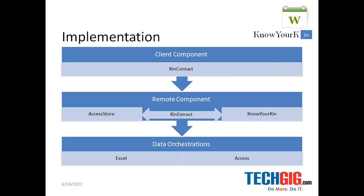This is the implementation basically. You have the client component where you have a contact as a client component — it contacts the remote component in the drive. You have a connect which has the link to the actual resource and access store resources. From there, we pull all the XML data into the directory structure, and the data orchestration is done in the Excel sheet as shown in the previous slides.